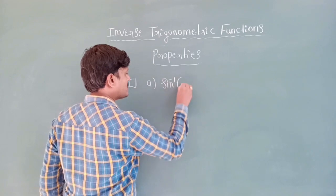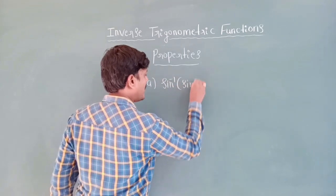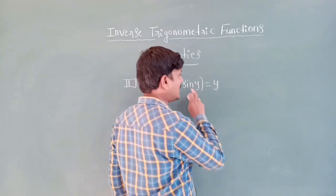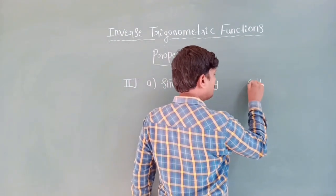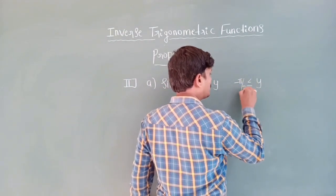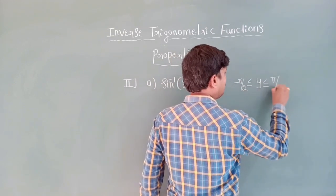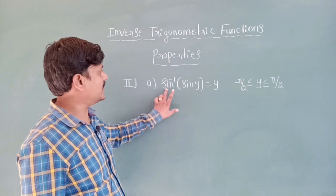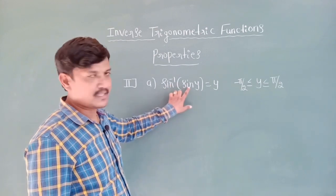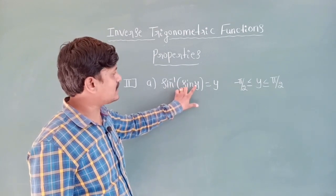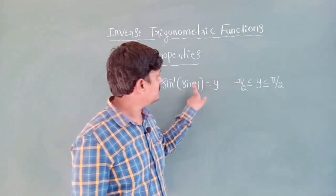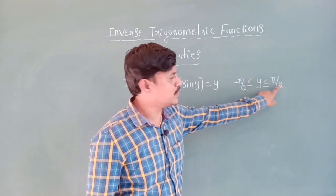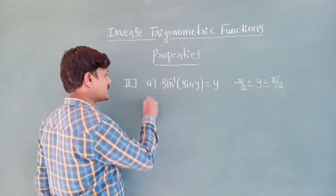Second property: sin⁻¹(sin y) = y, only when y lies between minus pi by two to plus pi by two, or minus 90 to plus 90 degrees. This means sin inverse and sin get cancelled, giving answer y, only when y must lie in this range.